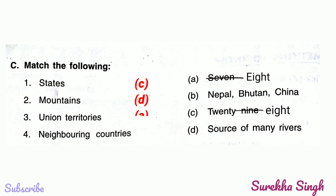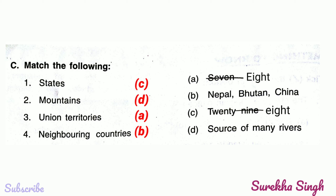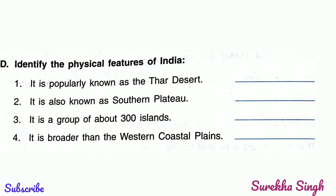2. Mountains — option D — they are the source of many rivers. 3. Union territories — option A — they are 8 in number. 4. Neighboring countries — option B — Nepal, Bhutan, China — they are our neighboring countries.